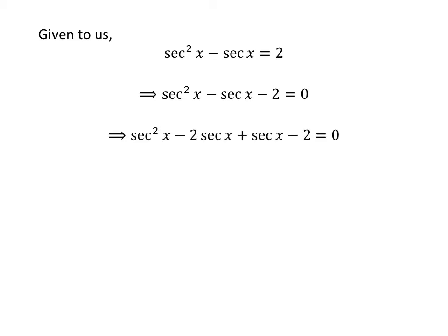Let us apply the quadratic factorizing technique here. We can write the above equation as square of secant of x minus 2 times secant of x plus secant of x minus 2 is equal to 0.